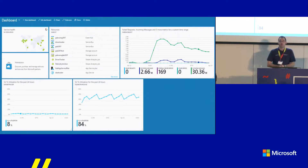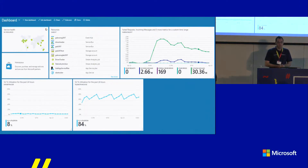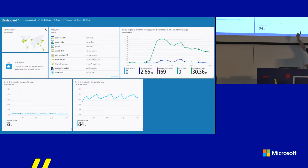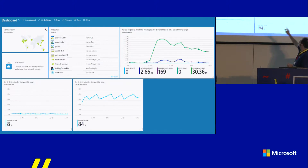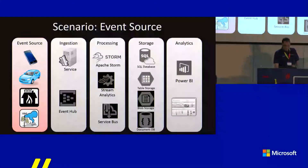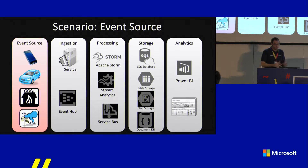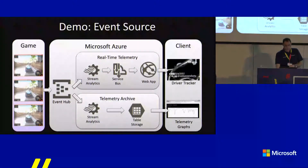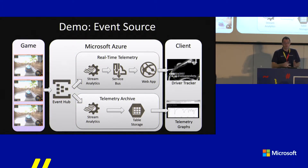This is a screenshot from the Azure portal during the Global Azure Bootcamp showing the graph of events running through the event hub and the utilization of the stream analytics jobs — the driver tracker one and telemetry archive one running at 84% utilization. Now let's start with the event source: the driving game, which sends messages into the event hub using C# code and the Service Bus SDK. I won't demo the event source setup — I'll move on to the ingestion phase and start creating the resources needed for this demo.